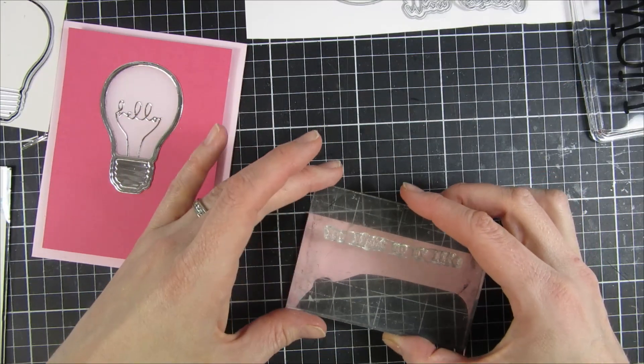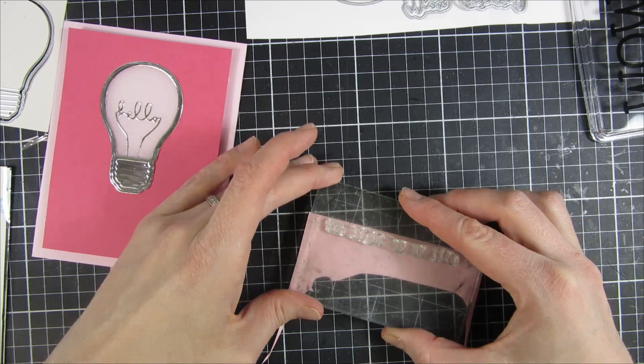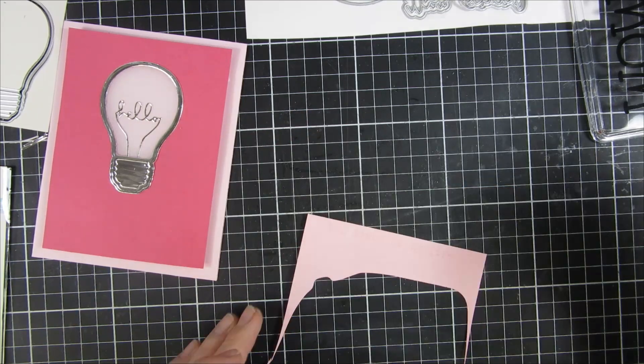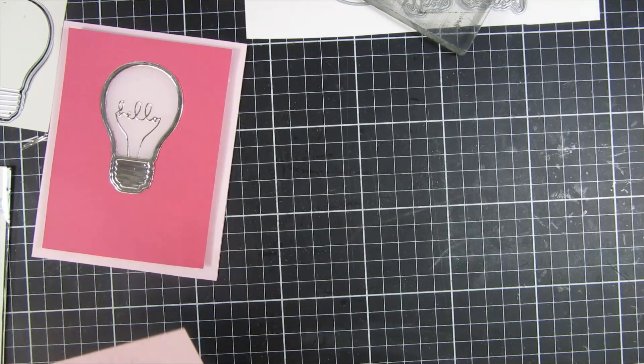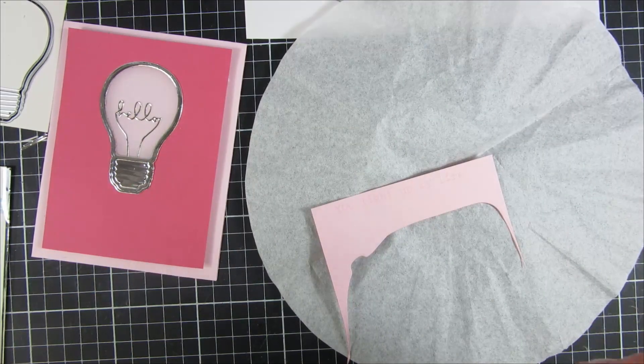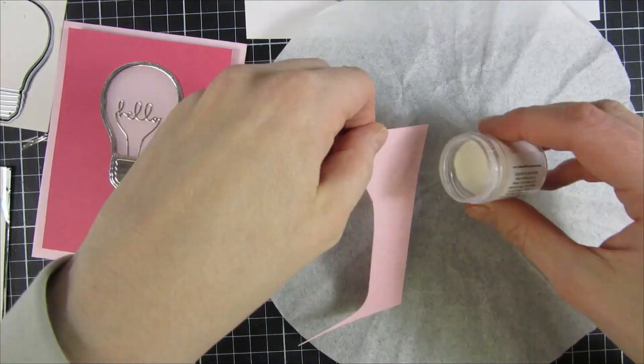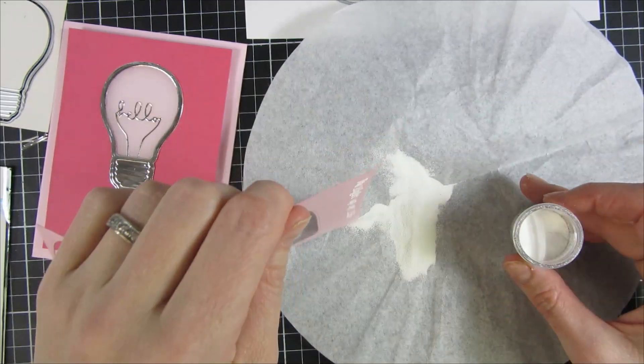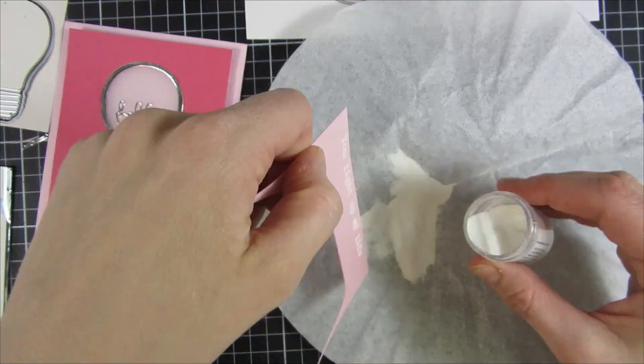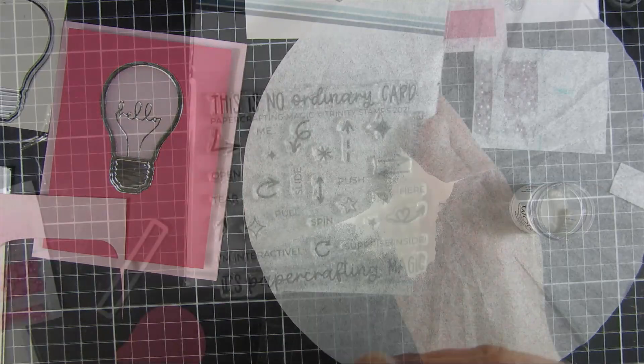I needed a sentiment, so I picked one from the What's Up stamp set. This is also a new 4x6 stamp set, and I will use that a little bit more in my next project. I heat embossed in white on top of some pink cardstock - the same pink cardstock that I have on my card base.